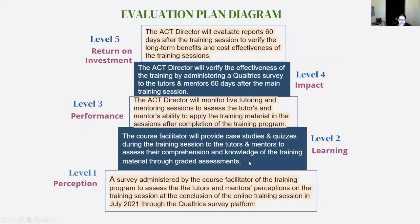Level two is learning. The course facilitator will provide case studies and quizzes during the training session to assess tutors and mentors' comprehension and knowledge of the training material. These graded assessments will be embedded within the Cougar View Learning Management System course shell. Tutors and mentors will participate in discussion boards, complete end-of-module quizzes, and analyze case studies. Level three is performance. The ACT director will monitor live tutoring and mentoring sessions with learning support students within ACT to assess the tutors and mentors' ability to apply the training material in live sessions. The director will take notes highlighting strengths and areas of improvement.